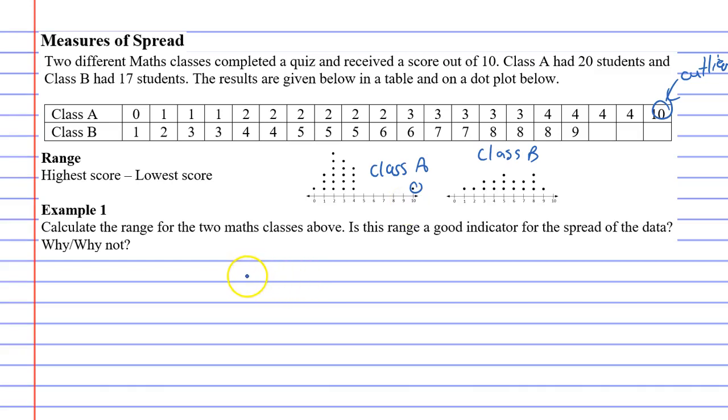Example one wants you to calculate the range for the two math classes above. And then it says, is this a good indicator for the spread of data? Why or why not? So what I actually want to do is calculate the range first for class B. And there's a reason I'm doing this.